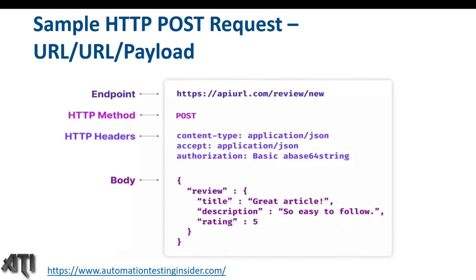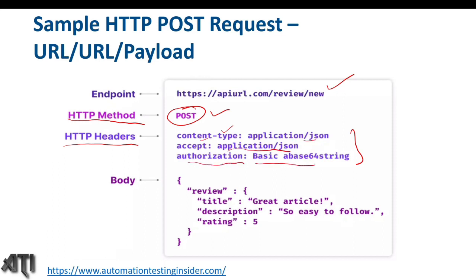Here we have a sample HTTP POST request. So how are we sending this request? We have an endpoint, or we can say the base URL. We have the HTTP method — we are sending a POST request. And we have HTTP headers. A header is extra information we provide while accessing something from the server. When we send the HTTP method request, we provide extra information under HTTP headers — like content type in JSON format, what it should accept, and authorization or authentication details.